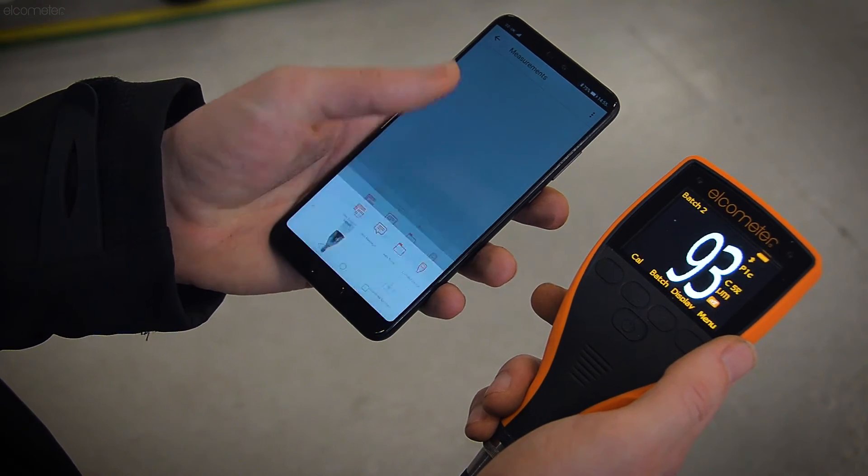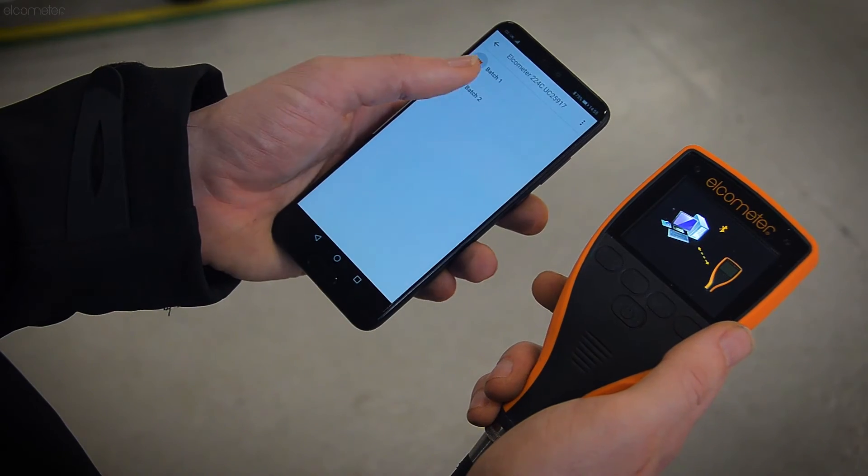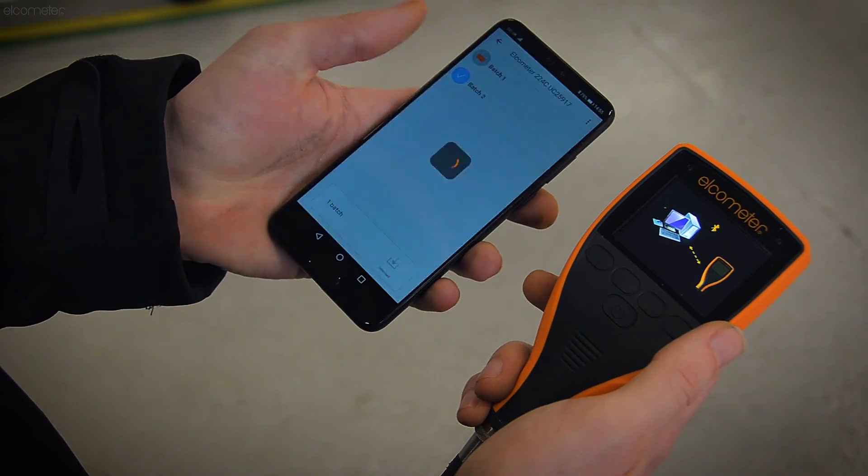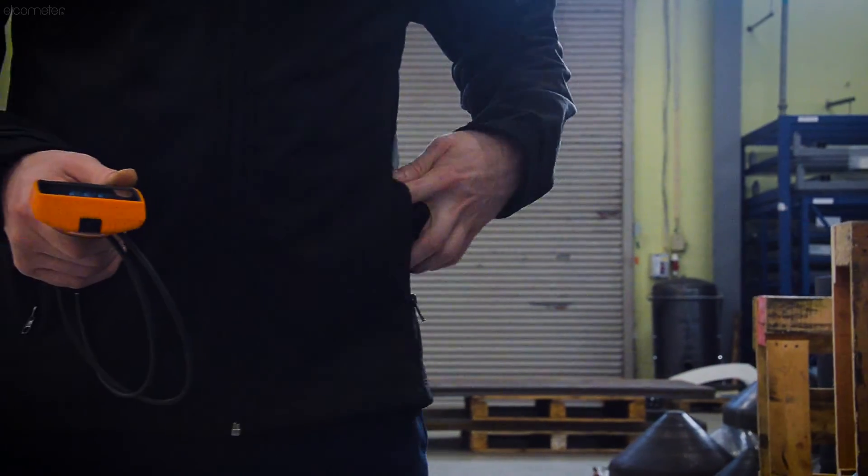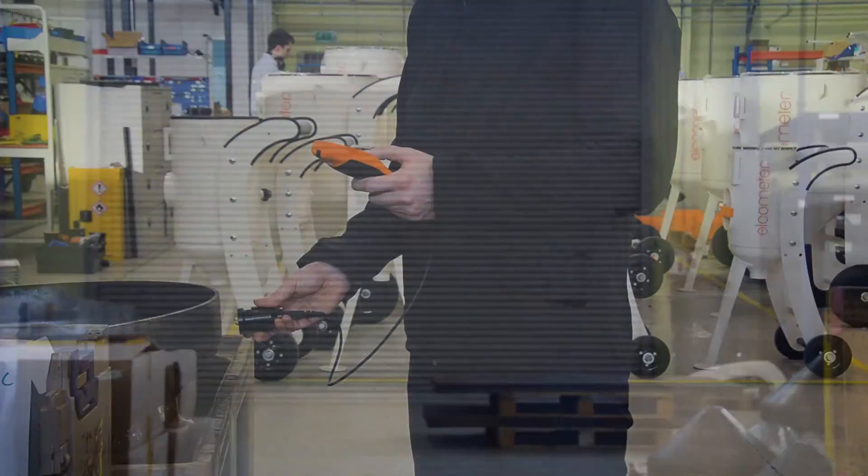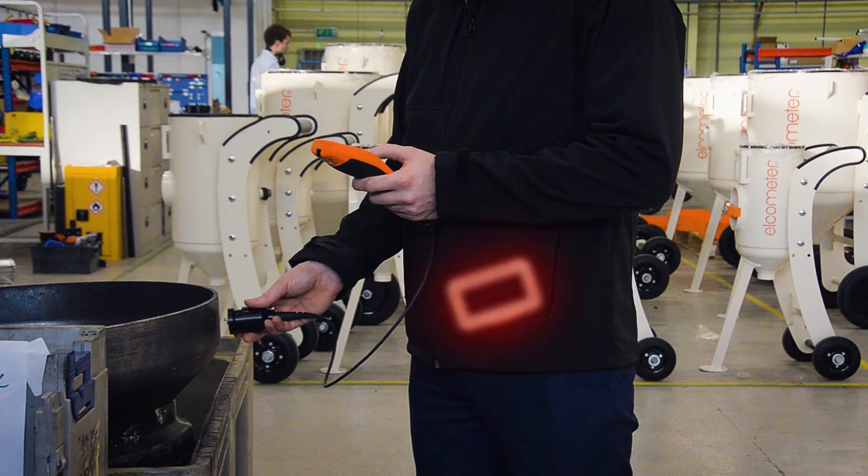Alternatively, connect the Elcometer 224 to your mobile device via Bluetooth and either transfer the readings from memory or transfer each reading into the ElcoMaster app live as you take them.